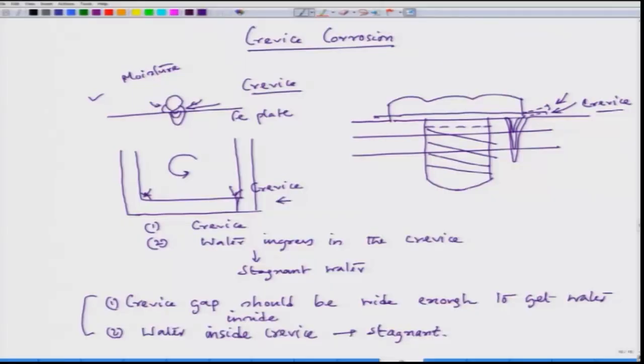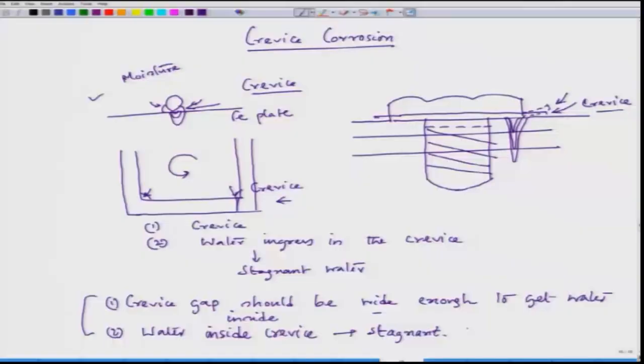In this case, this is a typical example where we can have a design criteria to control crevice. When we control the crevice, we have to make sure the gap should increase so that water can enter, but when there is relative flow between the water and the container, increasing this gap would allow turbulence to take place. That turbulence would not maintain stagnancy — because during crevice corrosion, stagnancy is a very important issue. If we have stagnant solution in the crevice, only then is crevice attack possible at a very high rate.